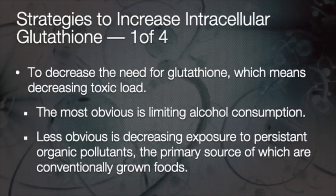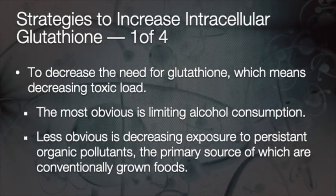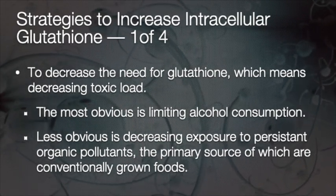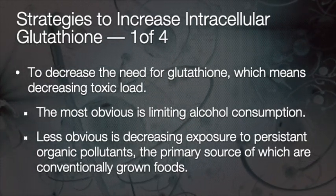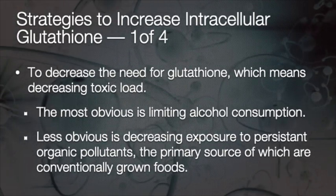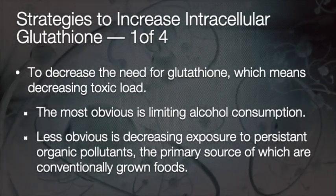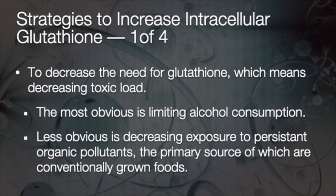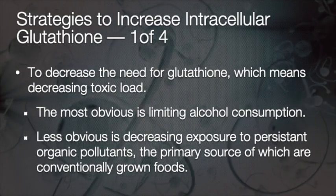Here are some strategies to increase intracellular glutathione. The first is to decrease the need for glutathione itself — meaning decrease toxic load. The most obvious is to limit alcohol consumption and cigarette smoking. The less obvious is decreasing exposure to persistent organic pollutants, the primary source of which are conventionally grown foods — and this is actually huge.